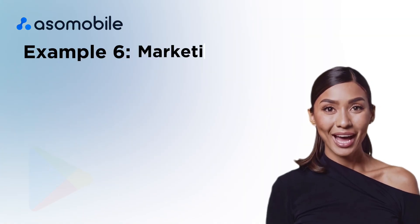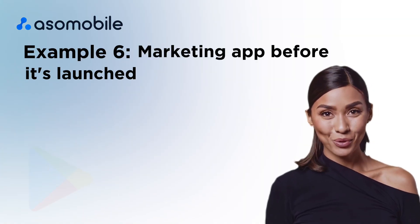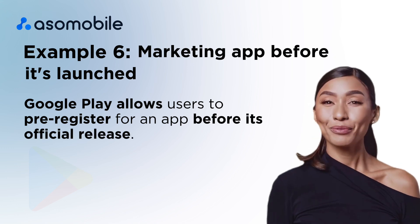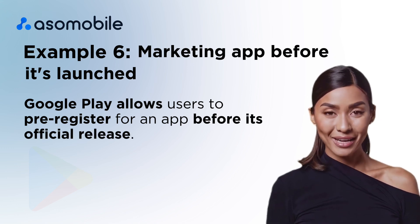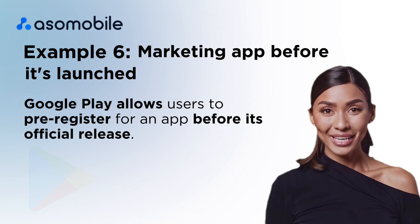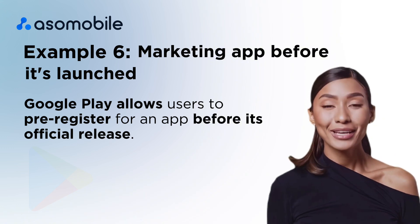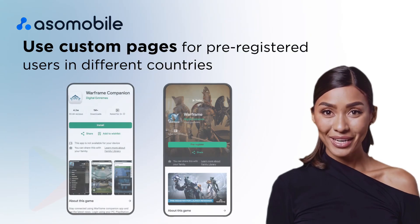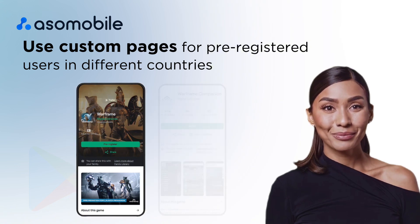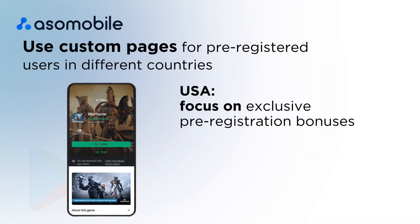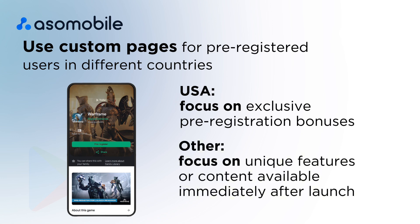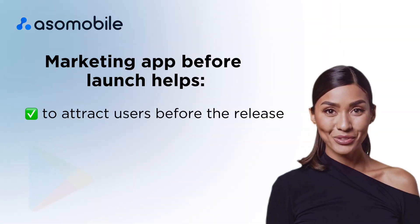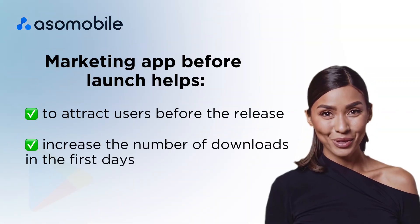Example 6: Marketing your app before it's launched. Google Play allows users to pre-register for an app before its official release. This helps create excitement and gather the first users who will receive notifications or even automatic installation on the day of release. To engage your audience more effectively, you can use customized pages for pre-registered users in different countries — for example, in the United States focusing on exclusive pre-registration bonuses, while in other regions focusing on unique features or content available immediately after launch. This helps attract users before the release and increase the number of downloads in the first days.